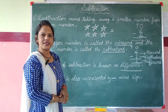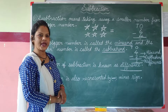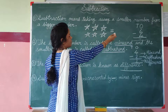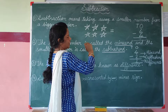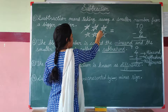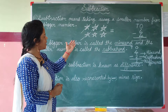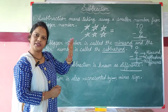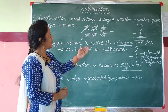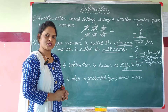Now how many stars do you have? 1, 2, 3, 4.